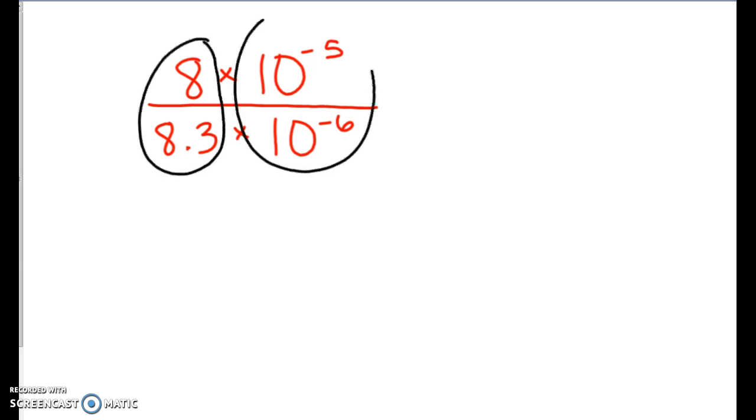All right, let's do one more with maybe some negatives. If we have 8 times 10 to the negative 5th divided by 8.3 times 10 to the negative 6th power. So again we are going to split it up into two separate problems.